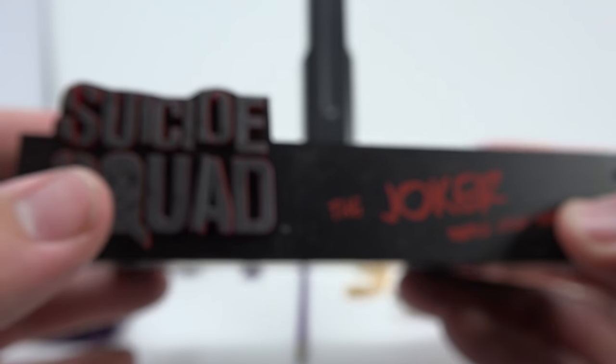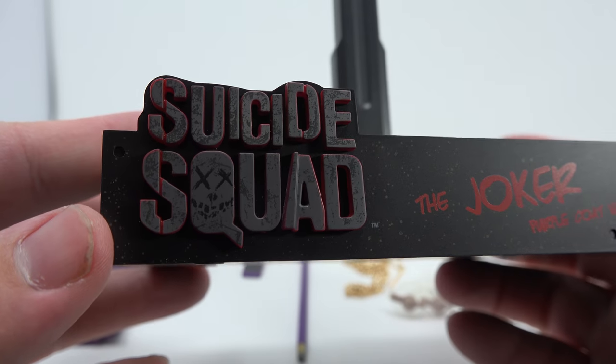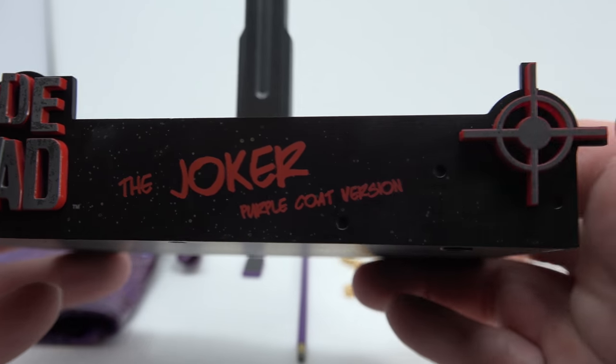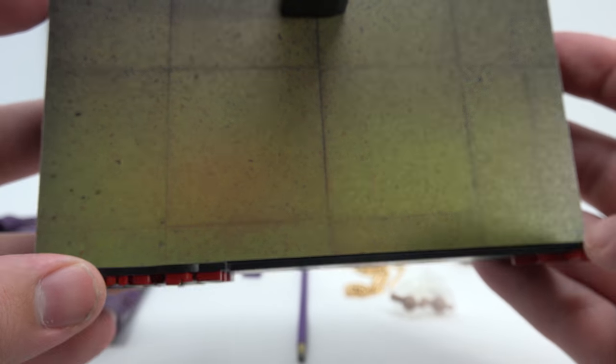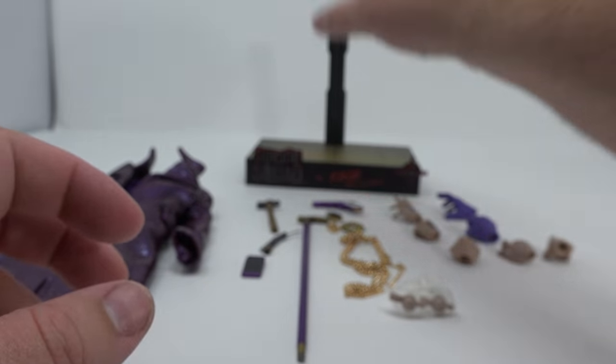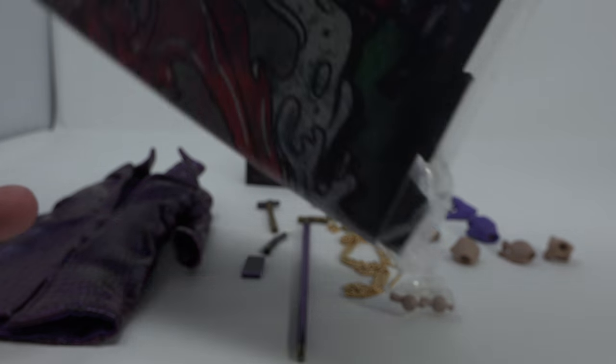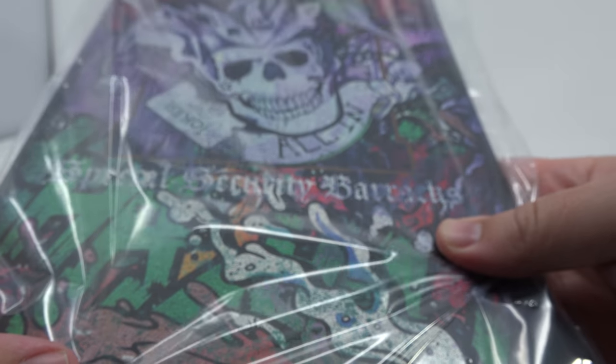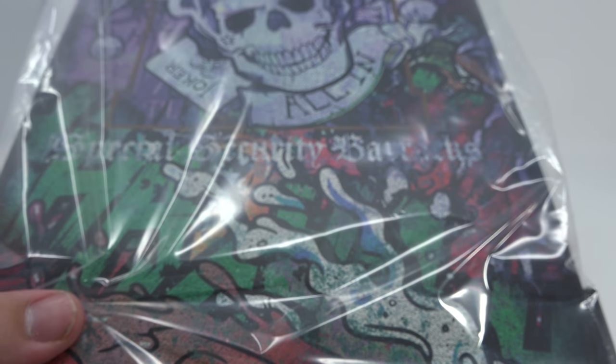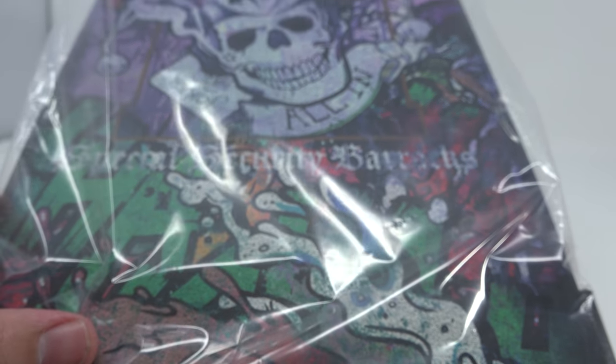And then you get your suicide squad base. Purple coat version. And the concrete sort of paper. Then you also get this background here which I don't think I'll ever use but you get it. Alright. Come right back and we'll have the figure out just the way it comes in the package.